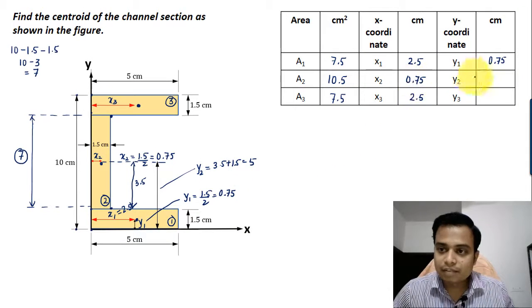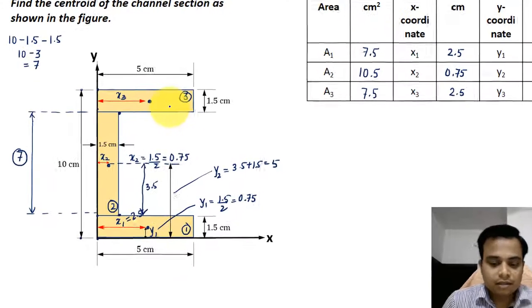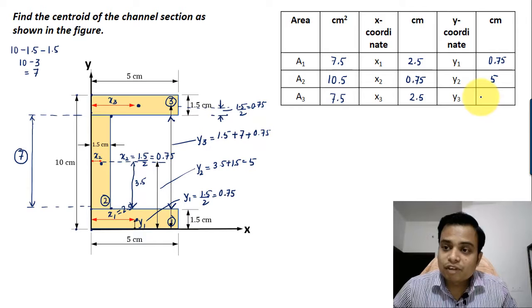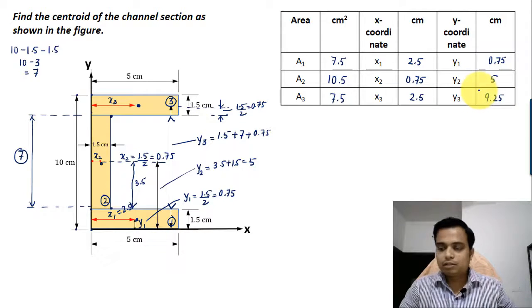And then finally we need to find the value of y3. Let me show you where y3 is, that's it, that's y3. Now watch this carefully: let's start from the bottom, this is going to be 1.5, and from here till we reach here that's 7, so 1.5 plus 7 plus this much, which is 1.5 divided by 2, that's 0.75. When you add all of these things, the final value you're going to get is 9.25 centimeters.